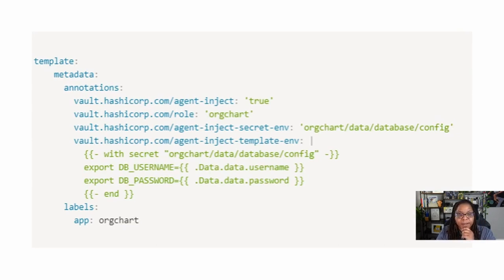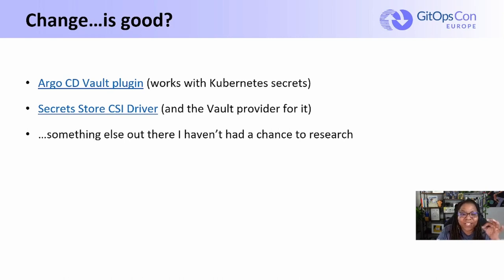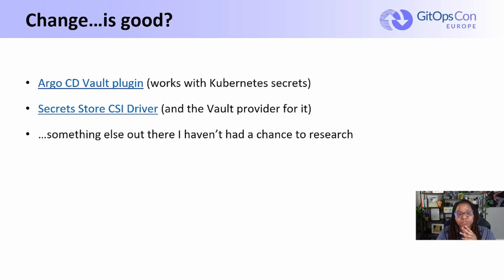If you like using environment variables and are committed to using them, you can use a template file where you source the ENV. For those of you who don't want to change anything you're currently doing in your app, add another sidecar. You can either use Argo Vault plugin, which works with Kubernetes secrets, or use secrets store CSI driver and the Vault provider for it — it will provide a volume mount to use your secrets from Vault without a sidecar container. If you have a secret store, you don't need to commit your secrets to version control, but Vault will automatically detect any differences for you.